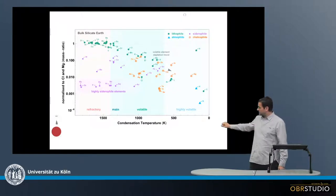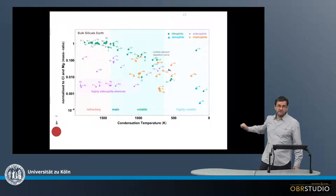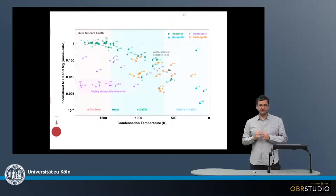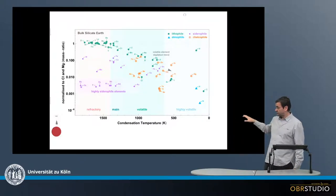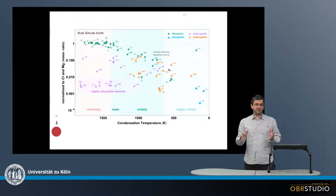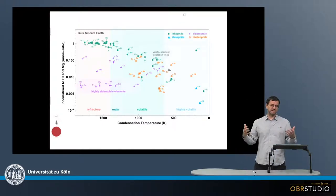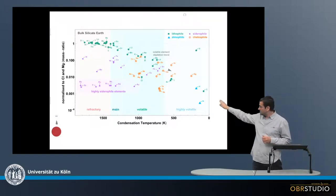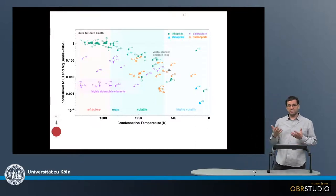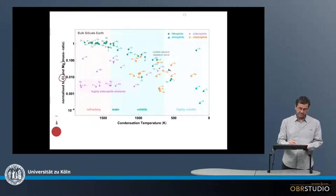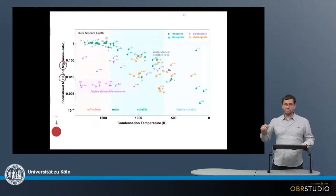In this plot, on the x-axis, is the decrease in the 50% condensation temperature, which is the temperature at which 50% of an element from a gas is condensed. This refers to the era before the Earth formed in the protoplanetary disk when all the material was completely evaporated and then started to condense. On the y-axis is the abundance of the elements normalized to CI chondrites and magnesium as a mass ratio.